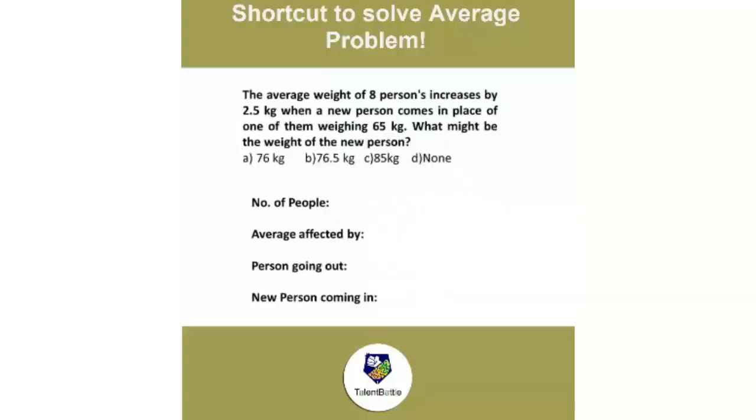Average weight of 8 person increases by 2.5 kg when a new person comes in place of one of them weighing 65 kg. So number of people are 8. Average increases by 2.5, so plus 2.5. Person going out has weight 65 kg. So new person coming in will be 65. I have to just multiply number of people into average affected by. So 8 into 2.5 will be equal to 20. So plus 20. So weight of new person is 85 kg.